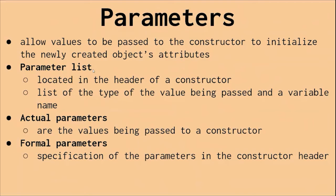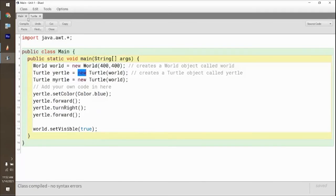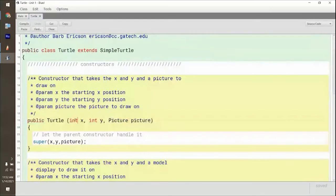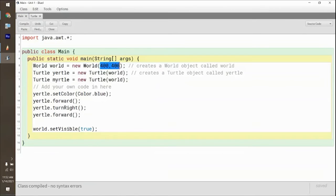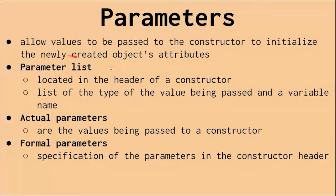Parameters — we talked about this already. It's the inputs. It's basically what goes into each constructor, each method. It says it allows values to be passed to the constructor to initialize newly created objects or attributes. Formal parameters are the abstract ones — like the ones I was showing in the constructor definition where we don't know what x is, what y is, what picture is. But when you actually call it and put in 400, 400, and world — those are the actual parameters. A lot of people use the terms synonymously, and just say parameter either way.